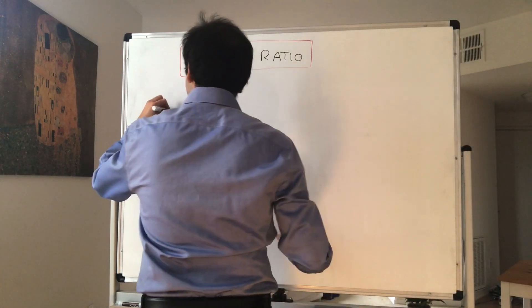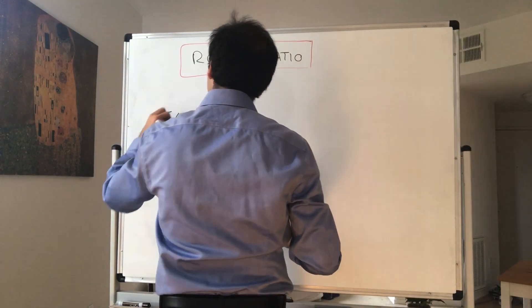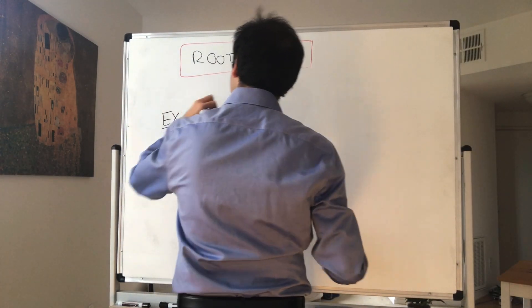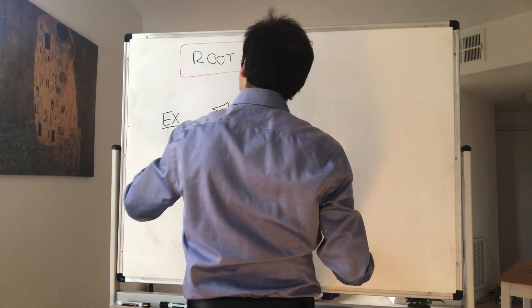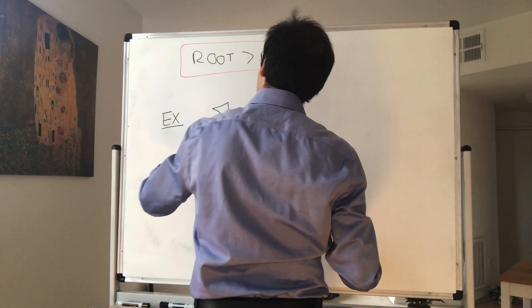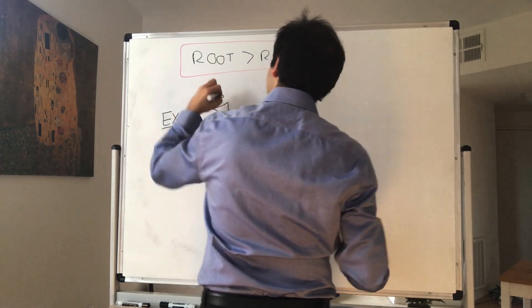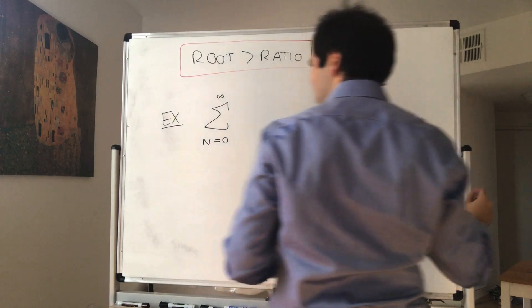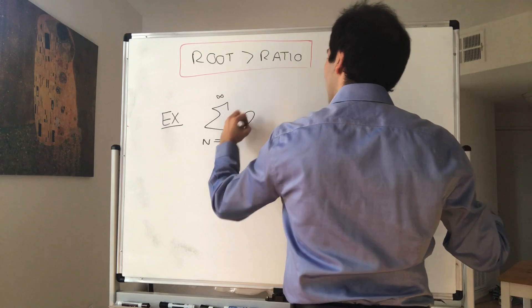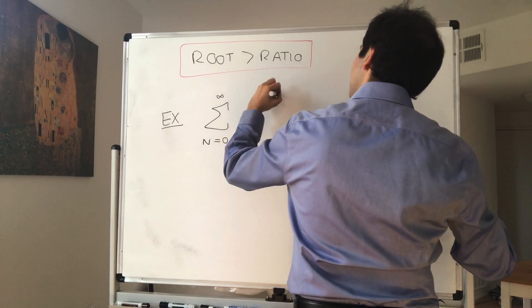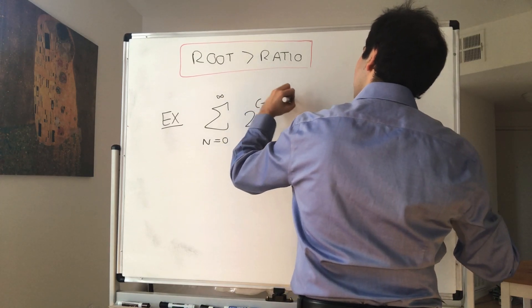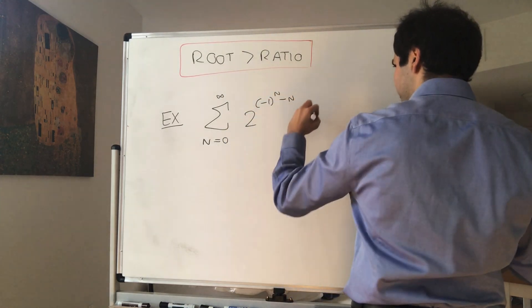For this, let's consider the following series, which I like to call the stock market series: the sum from 0 to infinity of 2 to the power of ((-1)^n minus n).